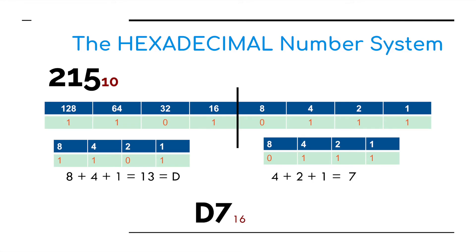We can also go the other way — starting with a base 10 number and converting it into hexadecimal via binary. For example, with one lot of 128, a 64, a 16, a 4, a 2, and a 1, which all add up to 215. Splitting the binary into two nibbles: the left-hand nibble has 8+4+1 = 13, which is D in hexadecimal. The right-hand nibble has 4+2+1 = 7. So 215 in base 10 converts to D7 in hexadecimal.